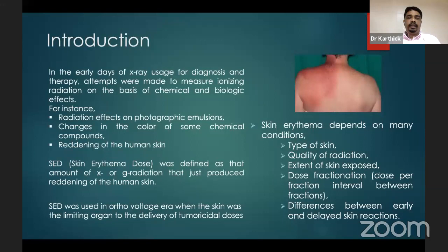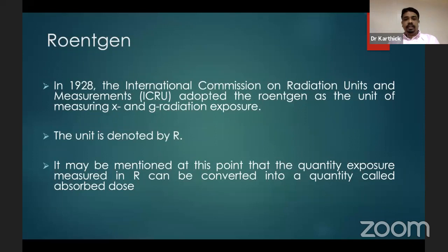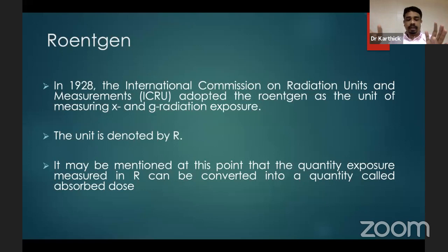Once linear accelerators and megavoltage radiation machines started in the 1920s and 30s, they gradually reduced orthovoltage therapy. In 1928, the International Commission of Radiological Units and Measurements defined a unit called the Roentgen for measuring X-rays and gamma rays. We need to be very clear: the unit of exposure is the Roentgen, it can be used only for X-rays and gamma rays, and it must be measured in air, not any other medium. The unit is denoted by R, and the quantity of exposure in R can be converted into other factors using conversion factors.